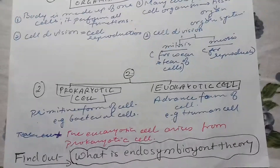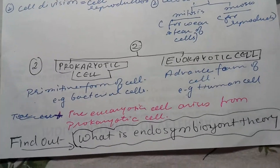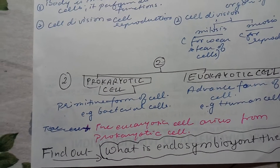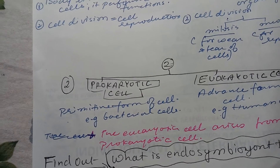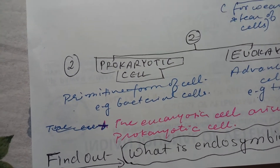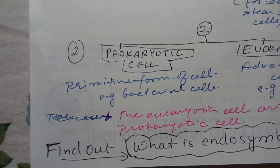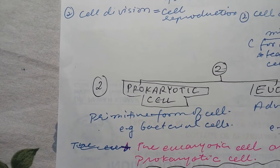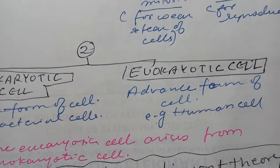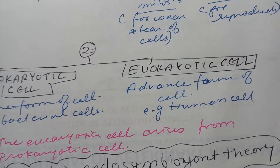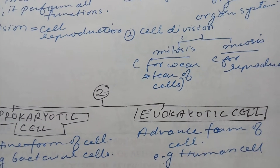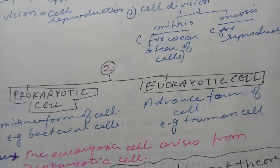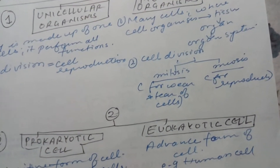You should also know the difference between prokaryotic and eukaryotic cells. Prokaryotic cells are the primitive form of cells — the first form that existed when life evolved. These cells did not have mitochondria, chloroplast, or many other organelles, but they still existed and performed their functions. Eukaryotic cells are the advanced form — they have all cell organelles, each with its own function, such as mitochondria and Golgi body. We will study these in our syllabus.